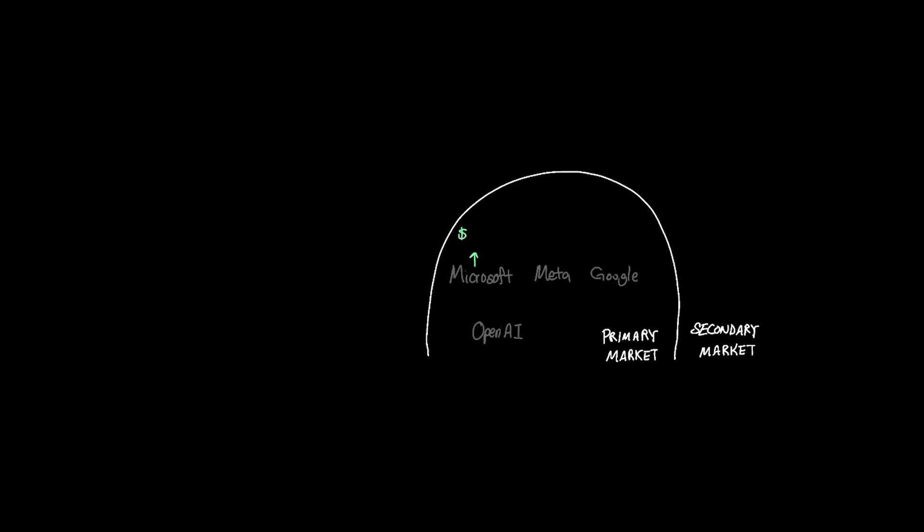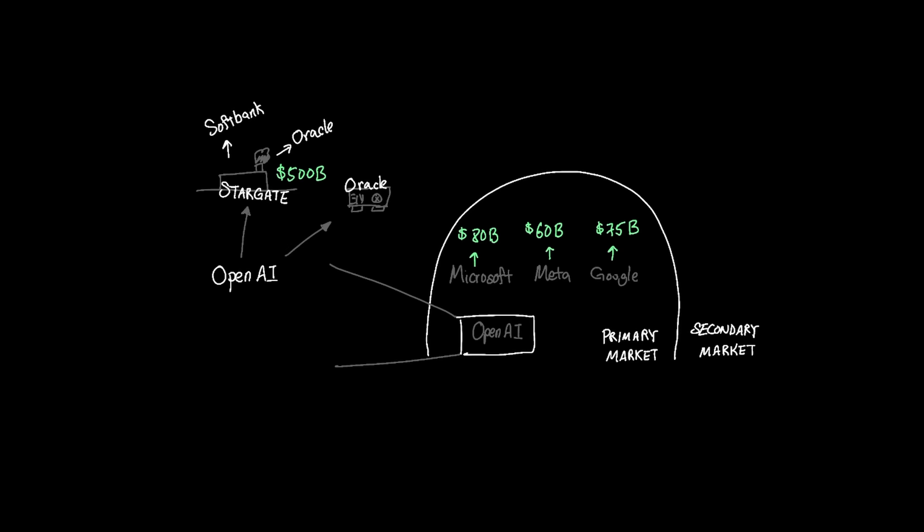Microsoft, Google, Meta all pledged to spend $60 to $100 billion in AI data centers alone. OpenAI's joint venture with Oracle and SoftBank is expected to spend $500 billion in their Stargate facility in Texas.